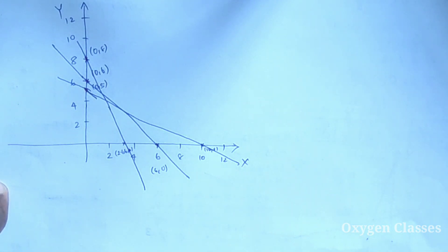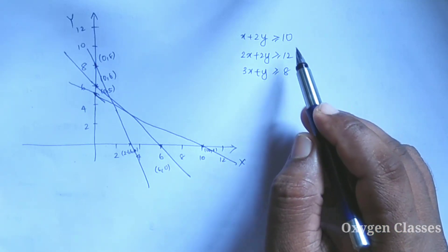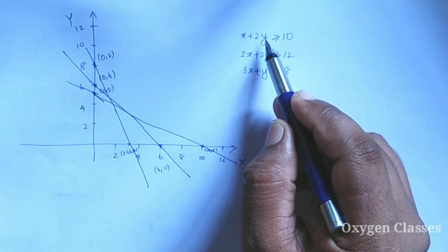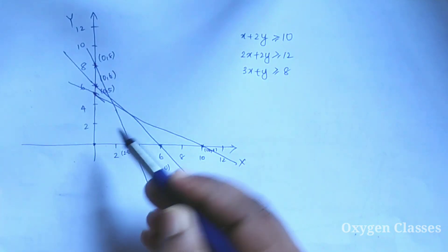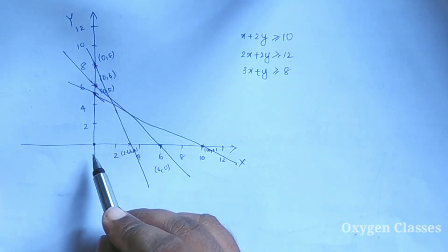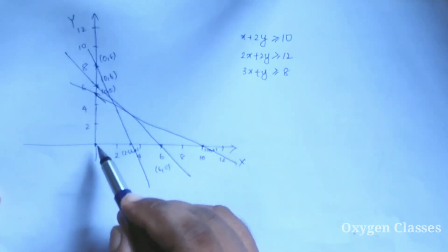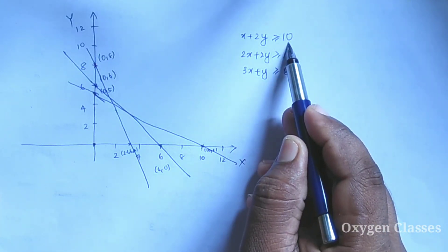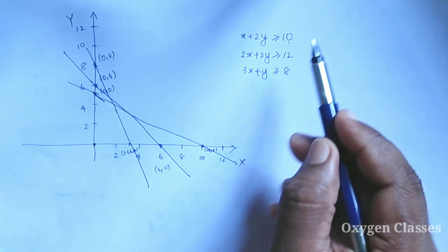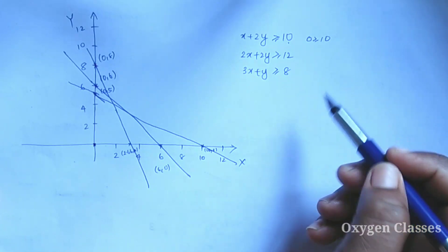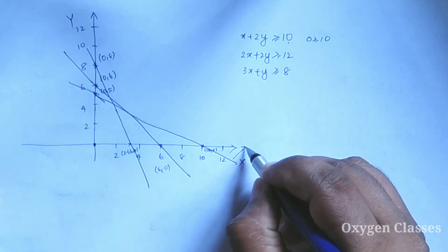Now we have to look at the feasible region. To test which side of the line the feasible region is, we take the point (0, 0). If the inequality is satisfied, the point will be included in the region. For the first line, if X equals 0 and Y equals 0, 0 is not greater than or equal to 10, so the region is on the other side.